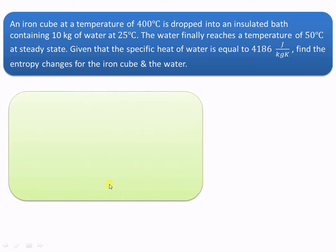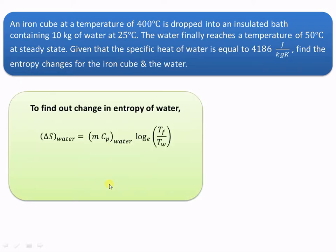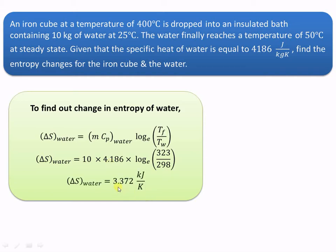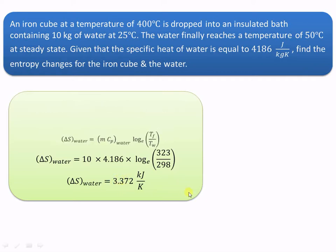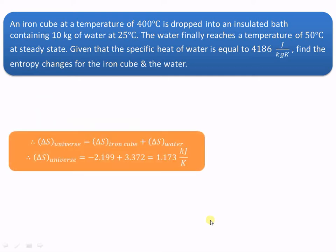Similarly, the change in entropy for water is MCP × ln(Tf / Tw). Substituting Tf as 323 K, initial water temperature as 298 K, mass as 10 kg, and CP as 4.186 kJ per kg Kelvin, we get 3.372 kJ per Kelvin. Since water is receiving heat, its entropy increases. The change in entropy of the universe is the sum of both, giving a positive value of 1.173 kJ per Kelvin, confirming that entropy of the universe increases.